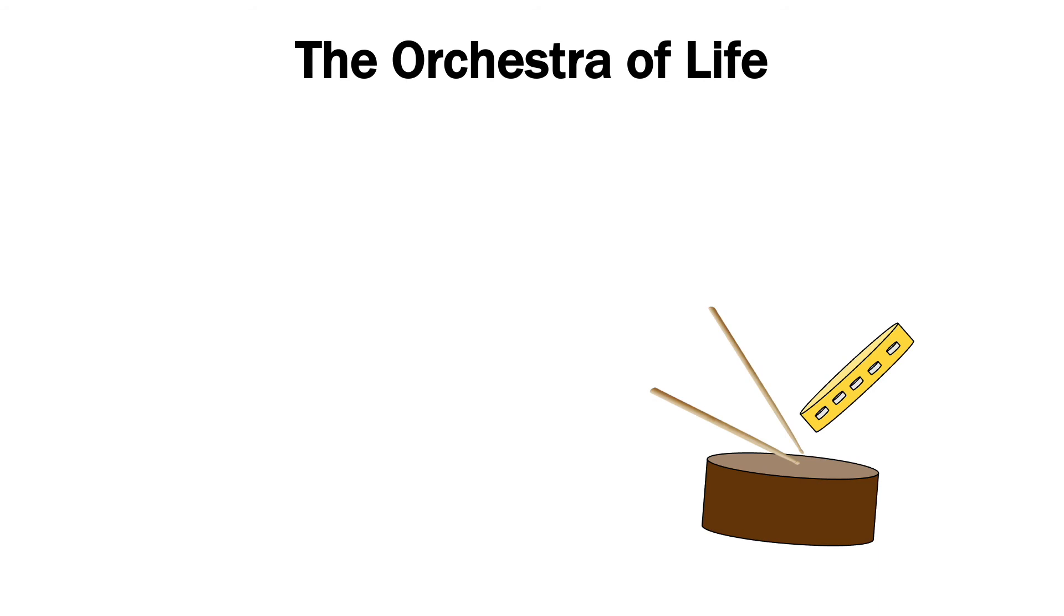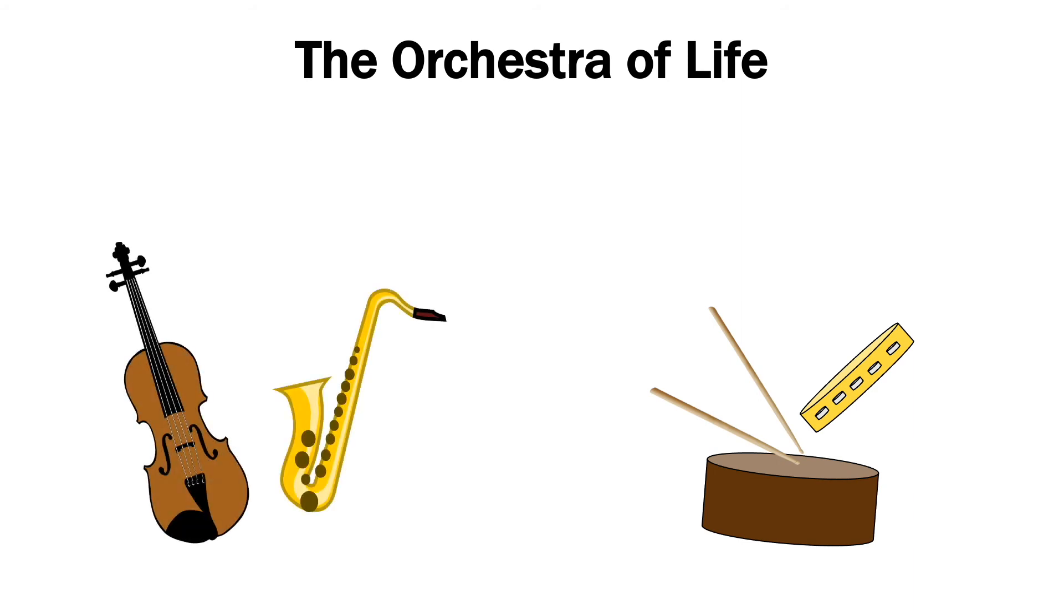While some members, such as the percussion, play throughout the entirety of the song, proteins that show constant synthesis throughout the cell cycle, others play during certain parts of the song, such as those playing strings or woodwinds. These are representatives of cyclin.